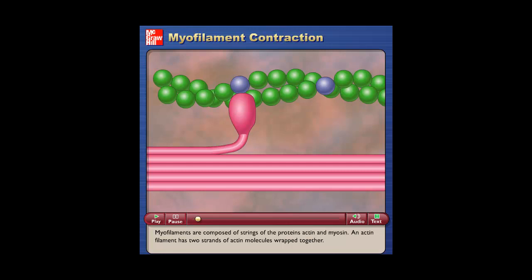Myofilaments are composed of strings of the proteins actin and myosin. An actin filament has two strands of actin molecules wrapped together.